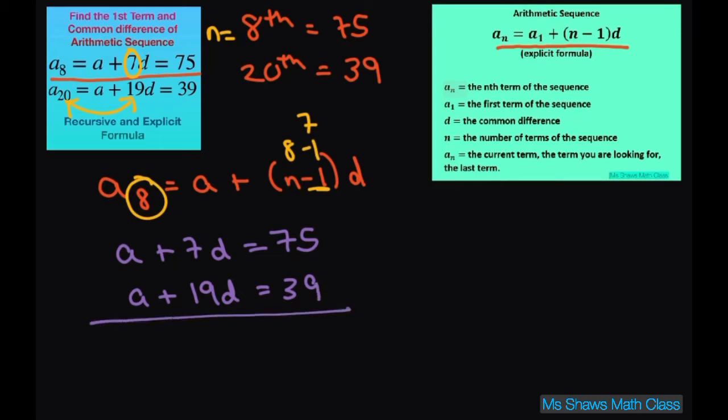Now using the process of elimination, we have a system of linear equations. We're going to eliminate the A and we get negative 12D equals 36. So D equals negative 3.